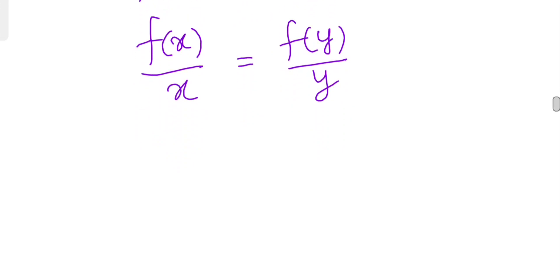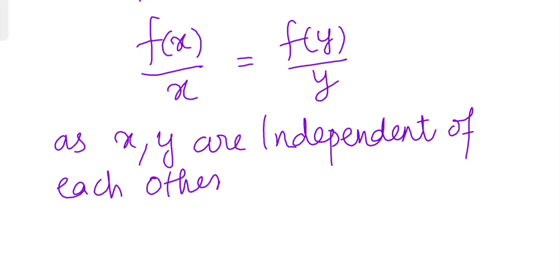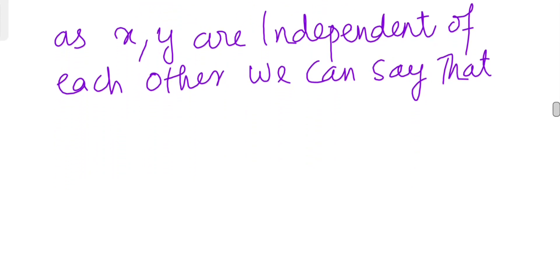As you know that x and y are both independent variables of each other, we can say that f of y by y is c, that is a constant.